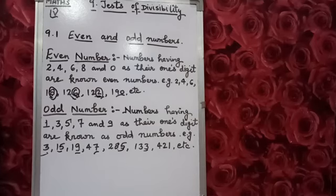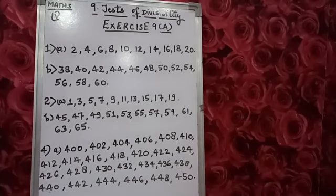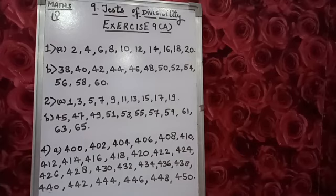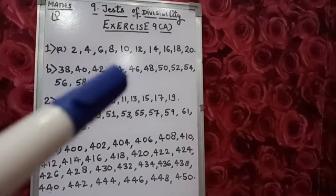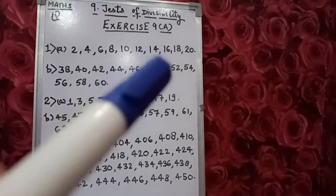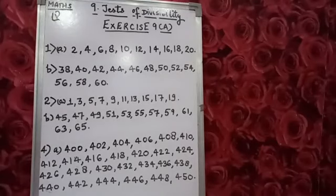Now let's see exercise 9A, question number 1. Question 1 is: write down all the even numbers between the given range. In part A, between 1 and 20. So the even numbers are: 2, 4, 6, 8, 10, 12, 14, 16, 18, and 20. These are the numbers lying between 1 to 20.